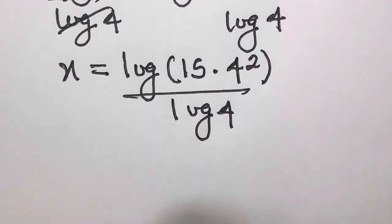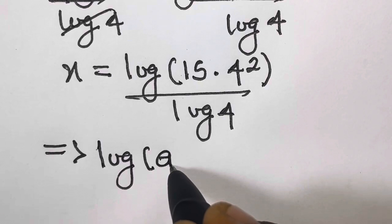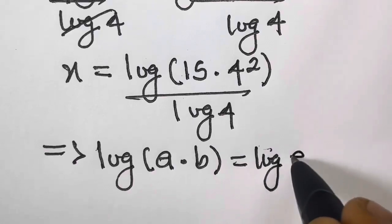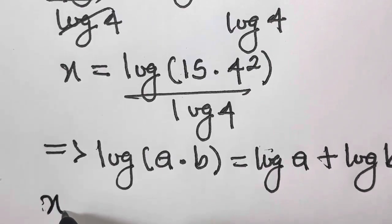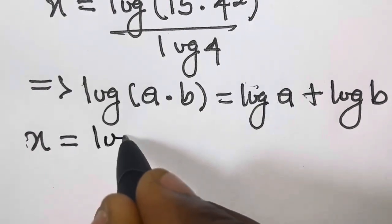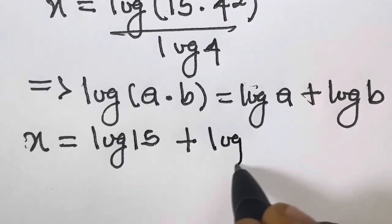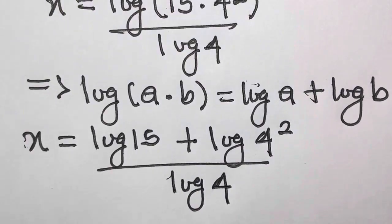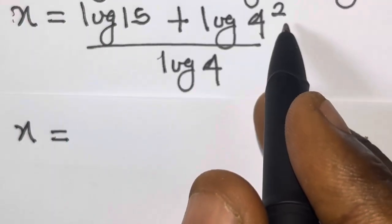We have not simplified this yet. So we recall that from the law of logarithm, we have log(a times b) — the multiplication changes to addition — so we have log a plus log b. Applying this above, we will have x equals log 15 plus log 4 raised to the power 2, all divided by log 4.